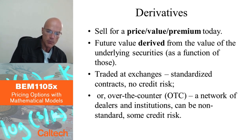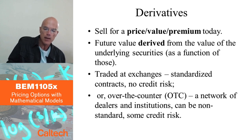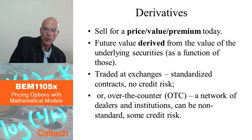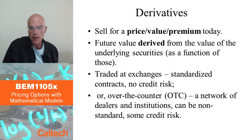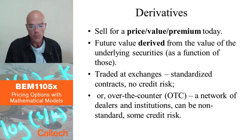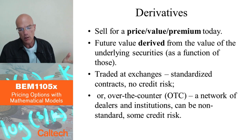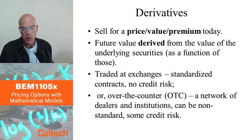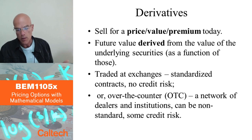In terms of trading, derivatives may be traded in two different ways. First, in a standardized way at derivative or option exchanges, where contracts are highly standardized with strict rules about how they are written, what is paid, and when — and there's basically no credit risk because the exchange guarantees payment. Second, they can be traded over the counter, or OTC, privately between dealers and institutions who find each other through trading networks, in which case they can write almost any contract they want, but contracts are less standardized and there is more credit risk.